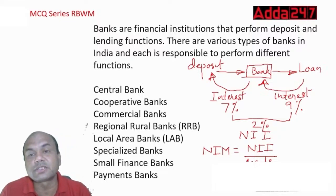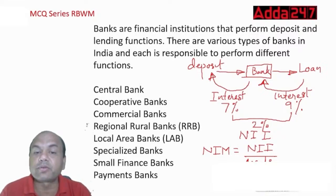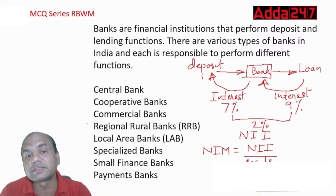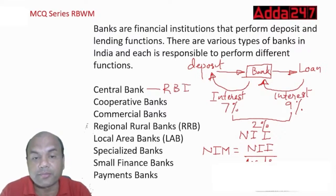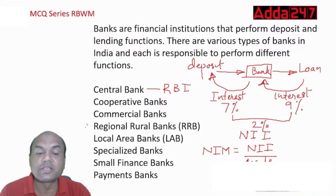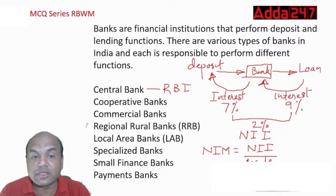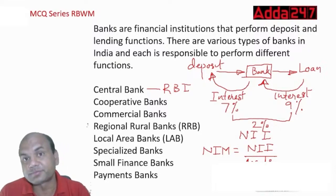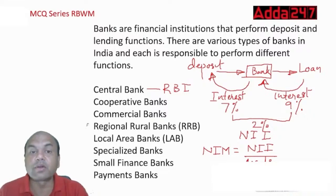There are various types of banks in India: central bank (RBI), cooperative banks, commercial banks, RRBs, local area banks, specialized banks, small finance banks, and payment banks — eight types in all, plus investment banks. In the exam, RRBs are frequently asked about. RRBs provide concessional credit to the agriculture and rural sector.